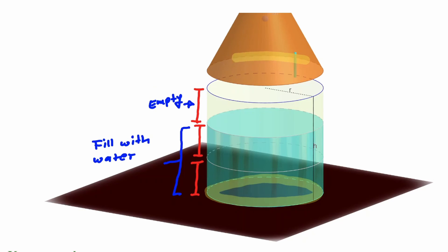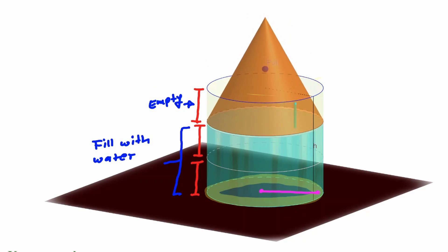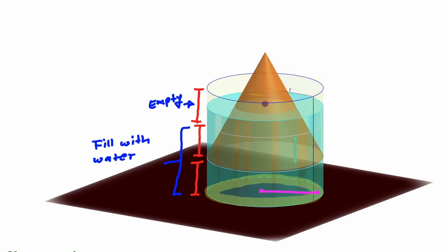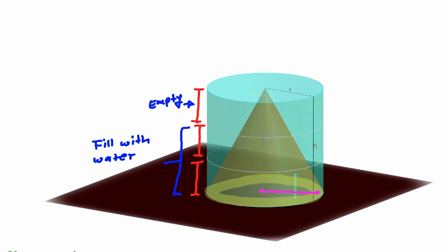What would happen if we consider a cone that has the same radius as the circle at the bottom of the cylinder? If we submerge this cone into the cylinder, notice that the section that was empty is now full as well. So now we have covered the full volume of the given cylinder.